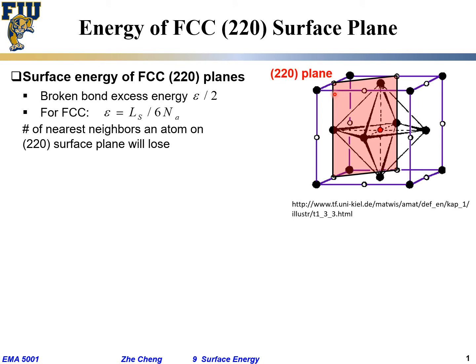Similarly, we are still going to consider: if I have this shaded red plane, how many nearest neighbor atoms would be lost for an atom on this surface? Let's consider this one, the B atom. This one is within the shaded (220) plane. Which atoms would be its nearest neighbors that, when you cut parallel to this plane, would be broken?